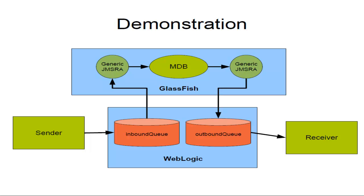In order to demonstrate the application we need to send some messages on the queue to start with, and I'm going to run a sender application. We could have run a receiver application to consume messages from the outbound queue, but to keep this demonstration short we're simply going to use the WebLogic admin console to monitor messages arriving on the outbound queue.